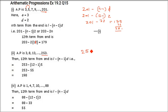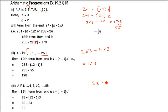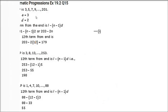Similarly for the second sub-part: L equals 253, minus (12−1)·d, that is 11 into d. d equals 8 minus 3 = 5. So 253 minus 55 equals 198. For the third sub-part: L equals 88, minus 11 into d where d equals 4 minus 1 = 3. So 88 minus 33 equals 55.